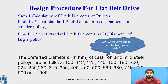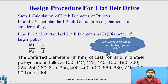Next, find the value of capital D, the diameter of the larger pulley. We use the equation n1 / n2 = D / d, meaning the speed ratio of input pulley to output pulley equals the diameter of the output pulley divided by the diameter of the input pulley. Since n1 and n2 are known input parameters and we already have the value of d, we can easily calculate capital D.